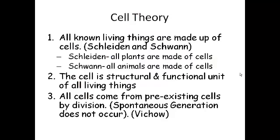Along with Rudolf Virchow, we also had some other scientists working on something called the cell theory. All known living things are made up of cells — that's Schleiden and Schwann. Schleiden said all plants are made of cells, and Schwann said all animals are made of cells. You can remember that because Schwann sounds like swan, and swans are animals. The second part: cells are the structure and function of all living things — cells are the basic units of life. The third part of the cell theory: all cells come from pre-existing cells via cell division. So spontaneous generation does not exist. Virchow figured out the third part of the cell theory.